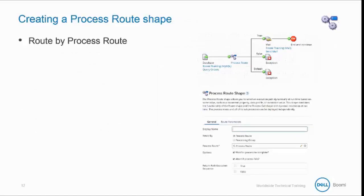If the process route shape is routed by a process route that calls a pass-through process, then incoming documents are grouped by process route key. The process associated with that key, as defined in the process route component, is called once for all documents that match the key. If the process being called is not a pass-through process, then the process route shape is executed once for each document that reaches it.